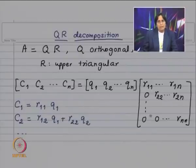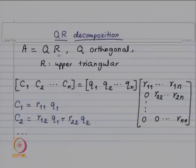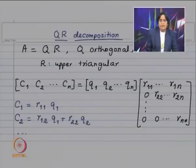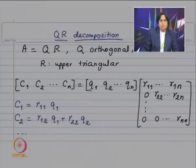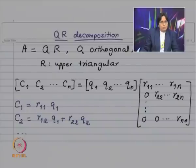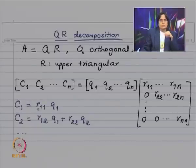Now, what we are going to do is multiply and equate the columns. So we are going to have C1 equal to r11 multiplied by Q1. When you post-multiply by such a matrix, the first column Q1 gets multiplied by r11. Then C2, the second column, will be r12 times Q1 plus r22 times Q2, and so on. What is given to us is matrix A — that means C1, C2, Cn are known. What we need to find is the columns of Q and entries of the upper triangular matrix R. Looking at the first equation, C1 equals r11 Q1, and since the Euclidean norm of Q1 equals 1, taking the norm of both sides gives modulus of r11 equal to norm of C1.